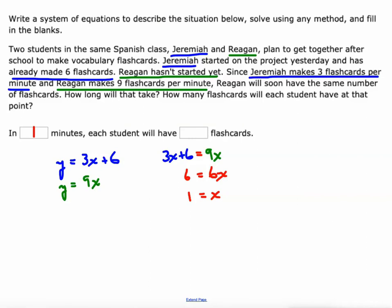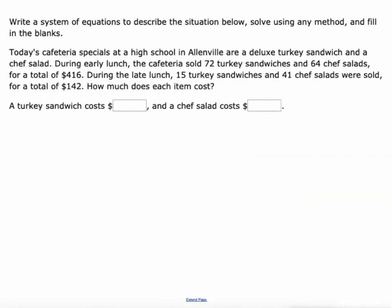So in one minute, how many flashcards will each one have? Well, I can plug that one into either equation, but the easier one is going to be to plug it into this equation for Regan. Just do nine times one, and Y equals nine. So in one minute, they'll both have nine flashcards. One more here.